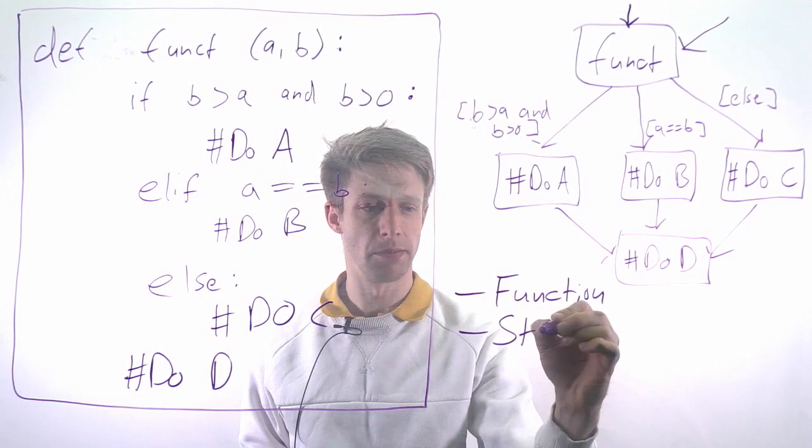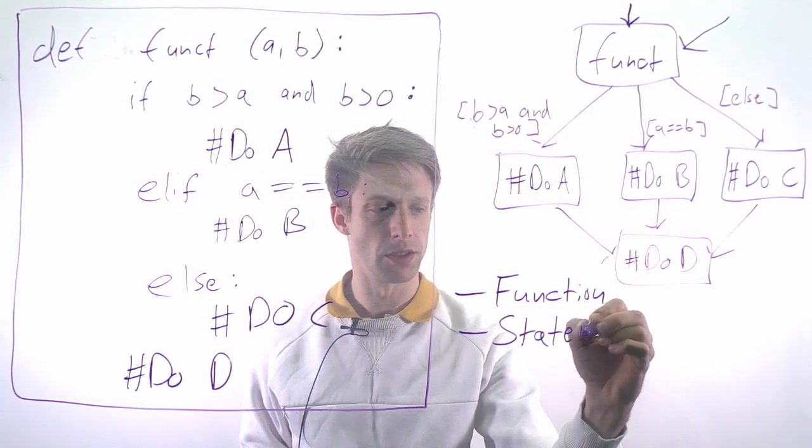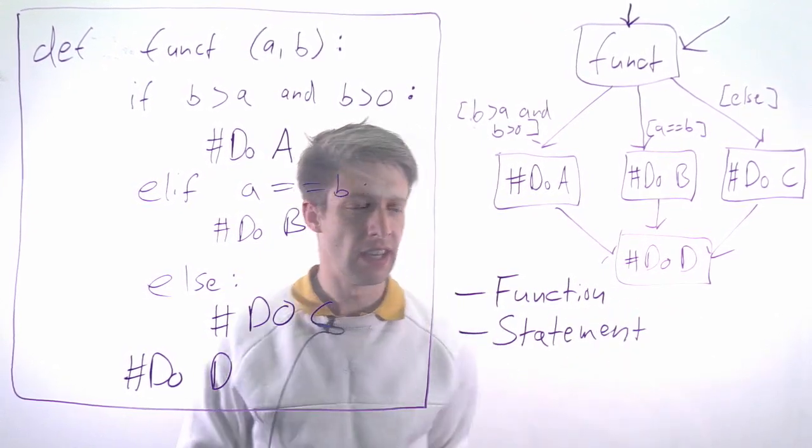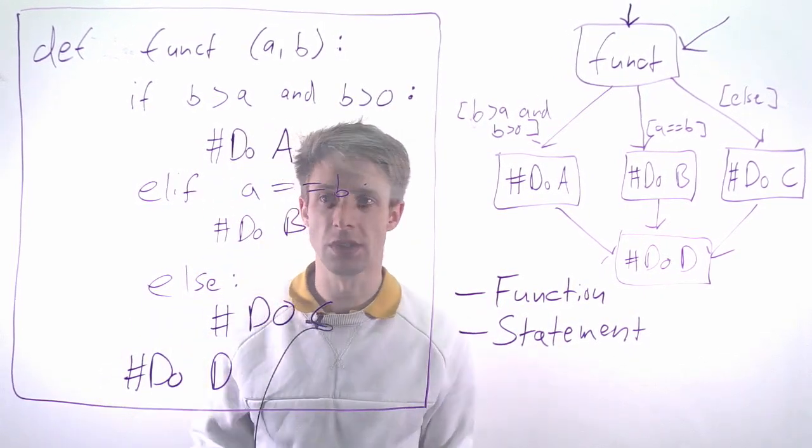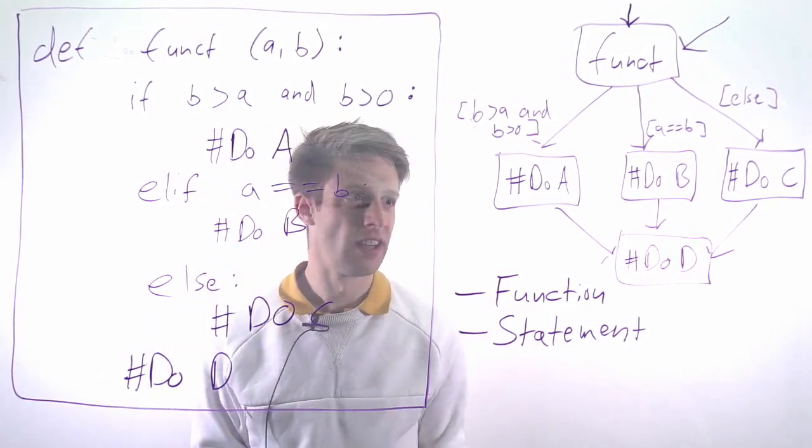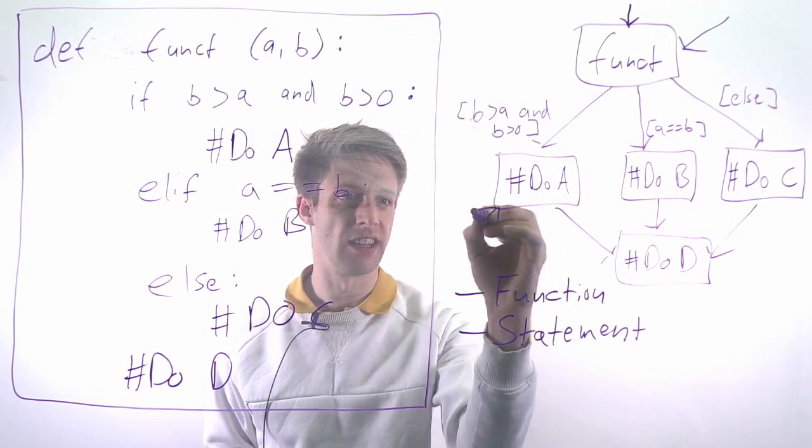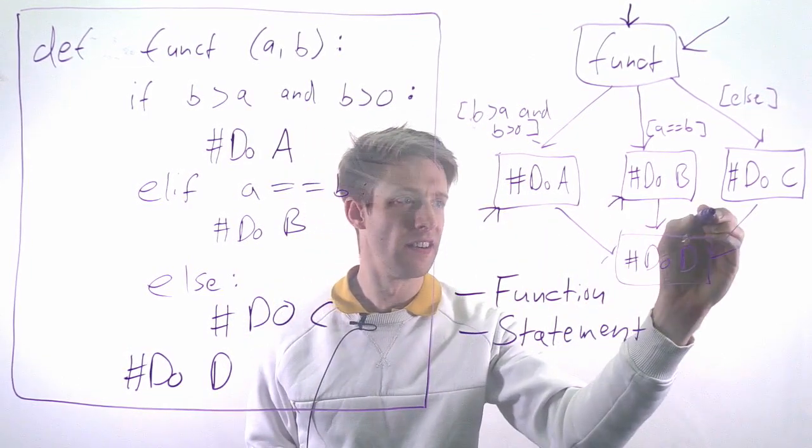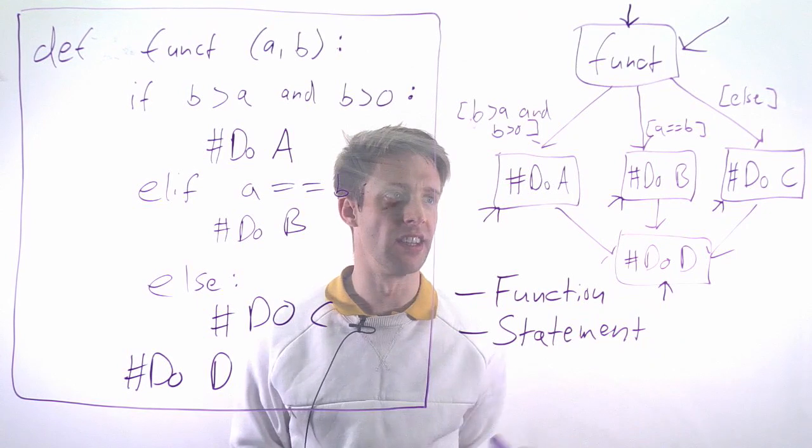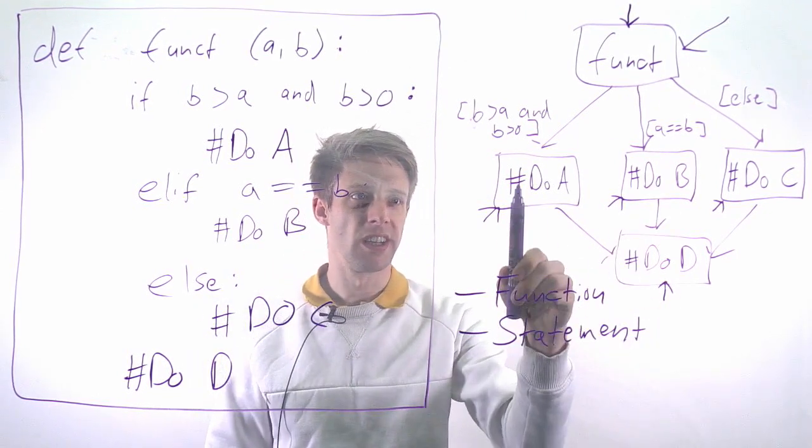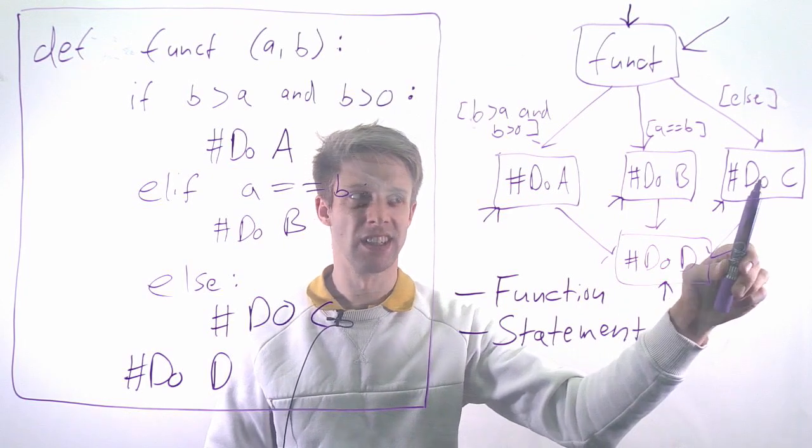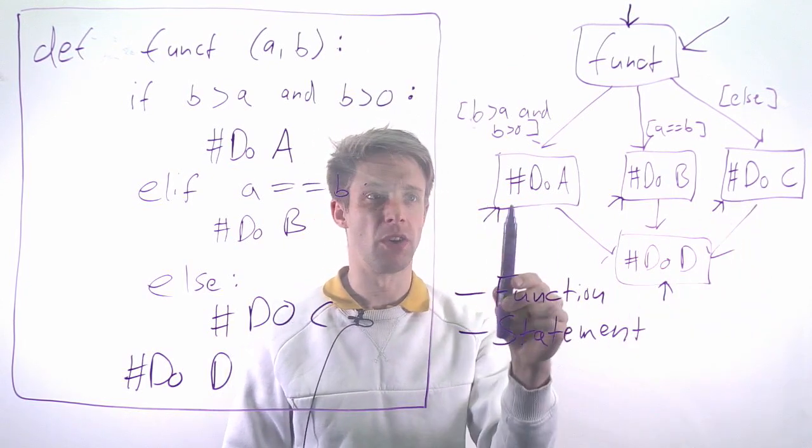The next one is called statement coverage. This means that we execute every single code statement at least once. In our case, it means we have to get to each of these places. If you think about this, every execution can only go into one of these three places, so to get 100% statement coverage we already need three different test cases.